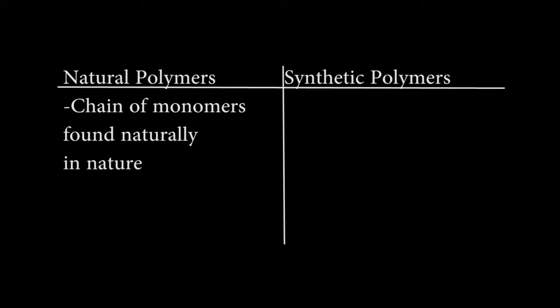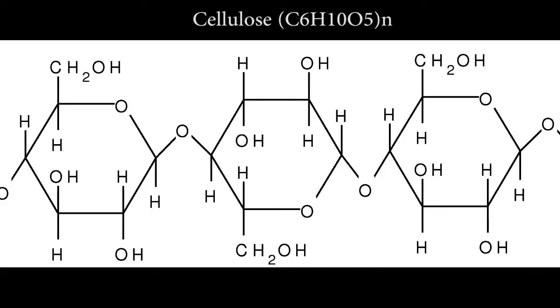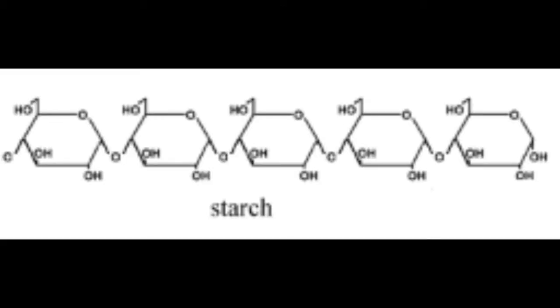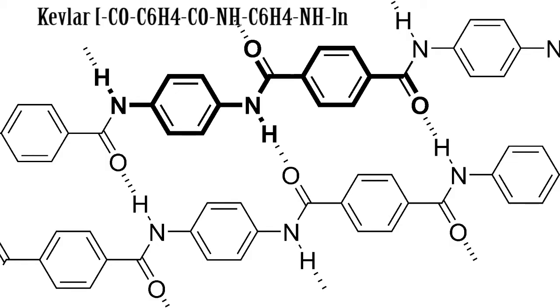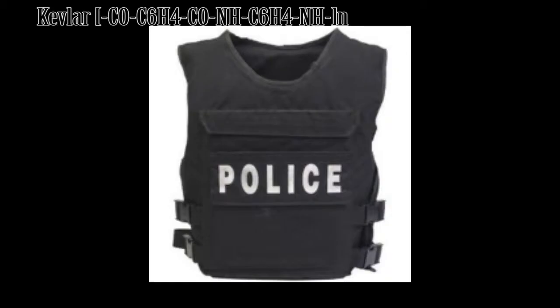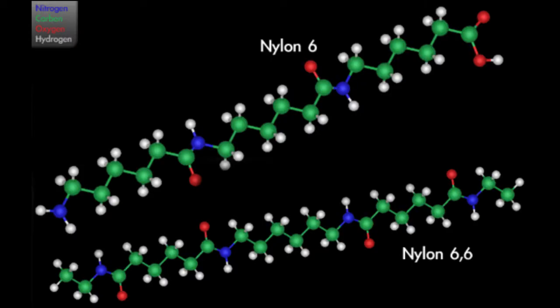Natural polymers are chains of monomers that are found naturally in nature. Some examples include cellulose and starch. Comparatively, synthetic polymers are chains of monomers developed by us. Some examples include kevlar and nylon.